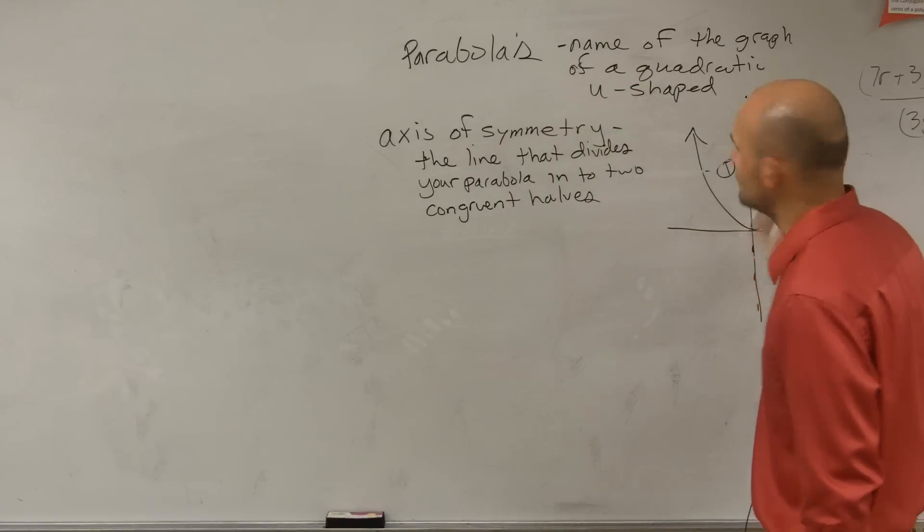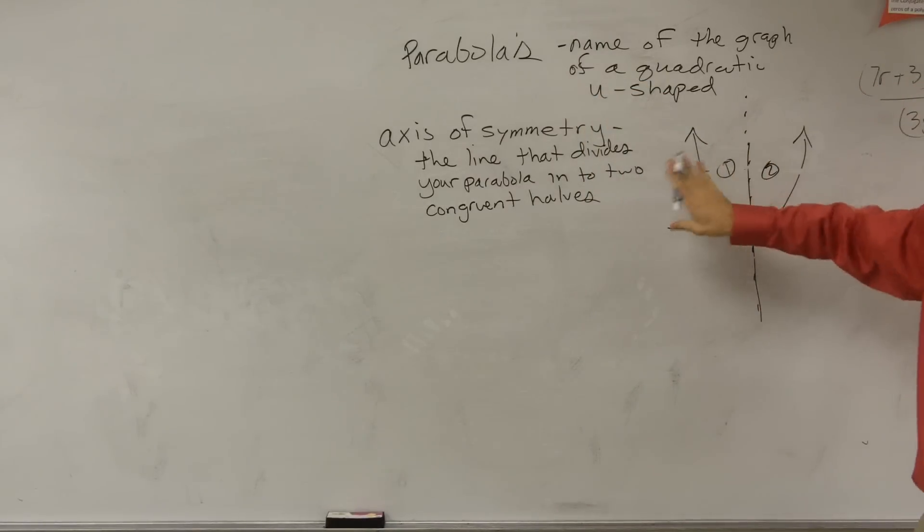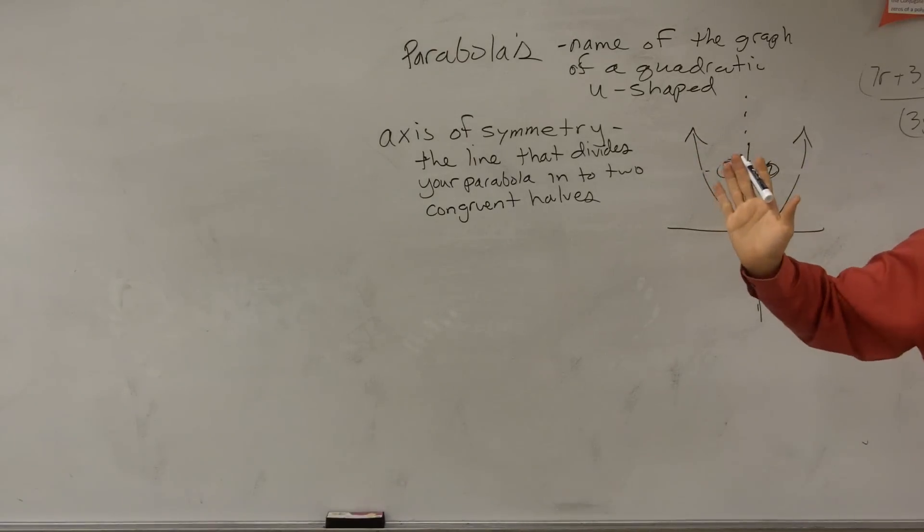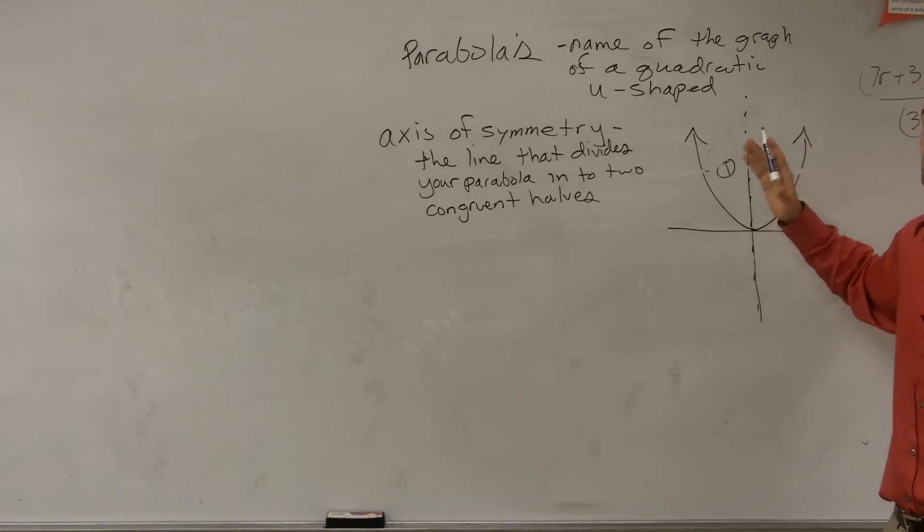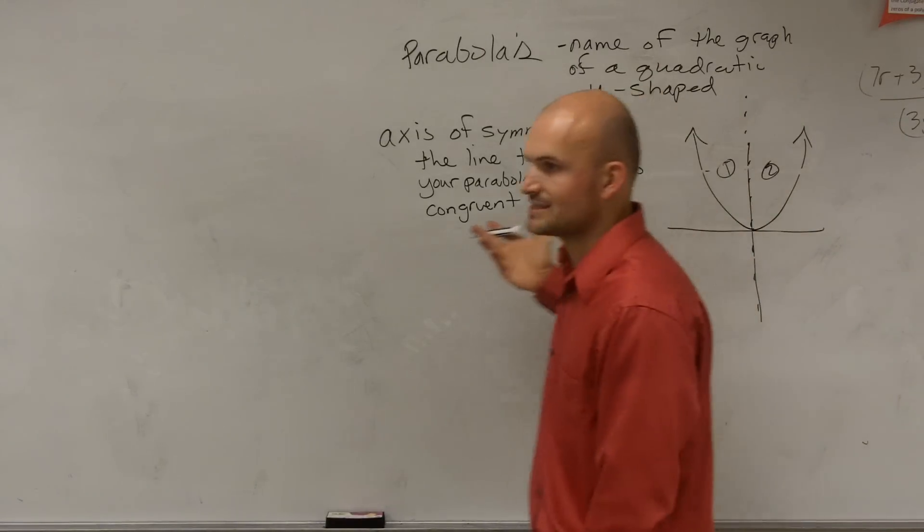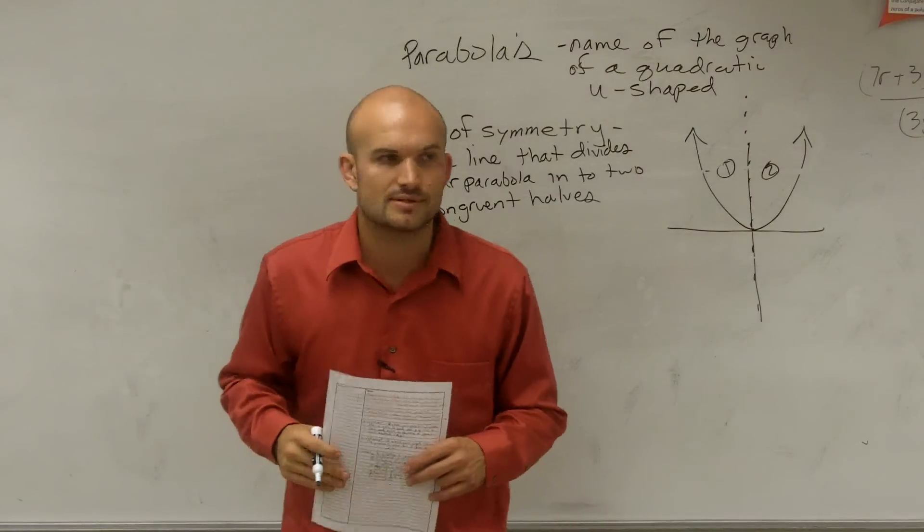So you could say half of my parabola 1 is congruent to my other half of my parabola 2. I always like to think about when I was dealing with geometry, if you kind of like flipped it about your axis of symmetry, you'd get the exact same shape, meaning they're congruent shapes.